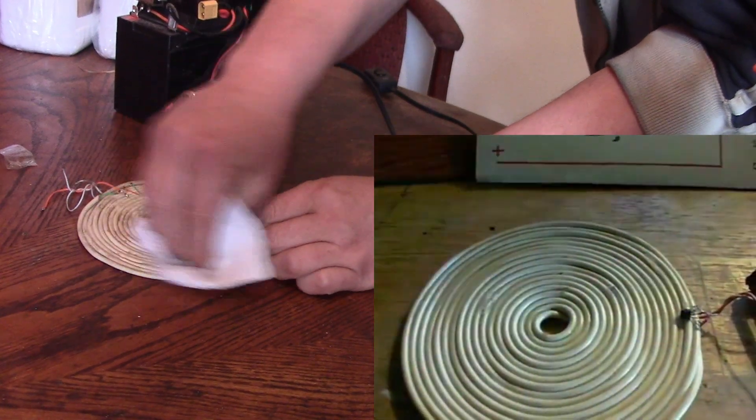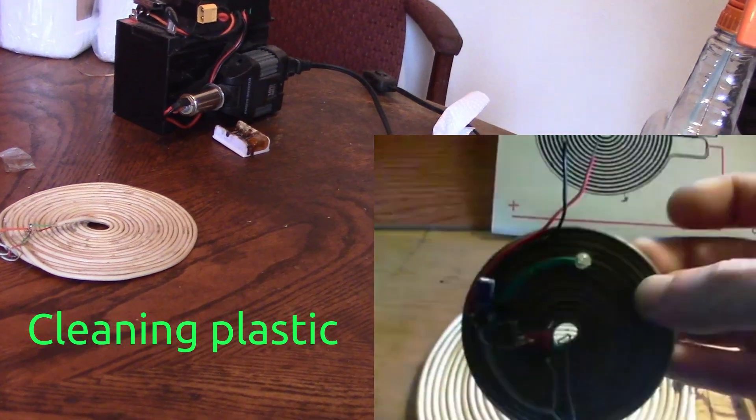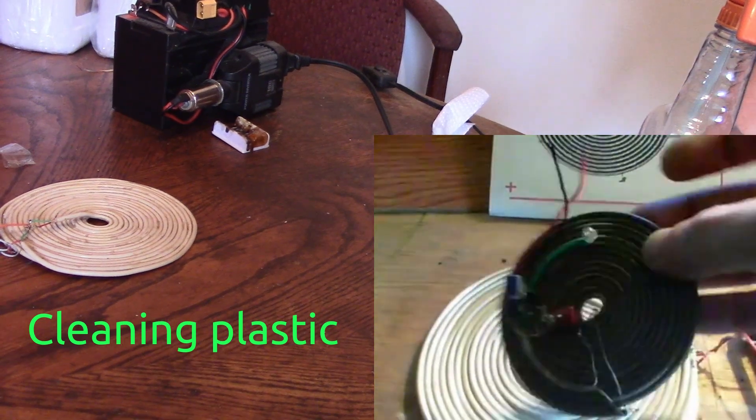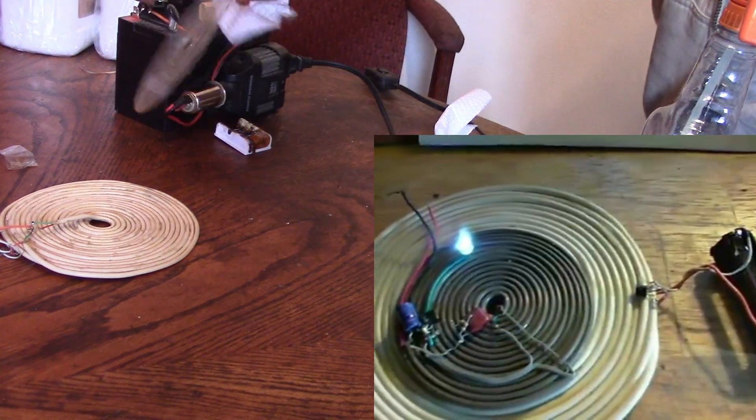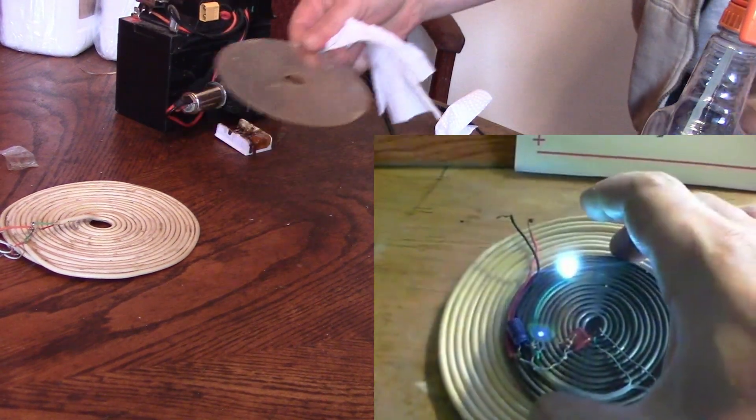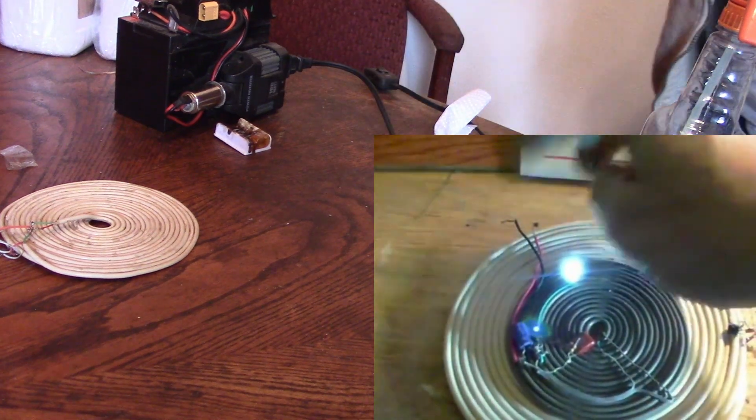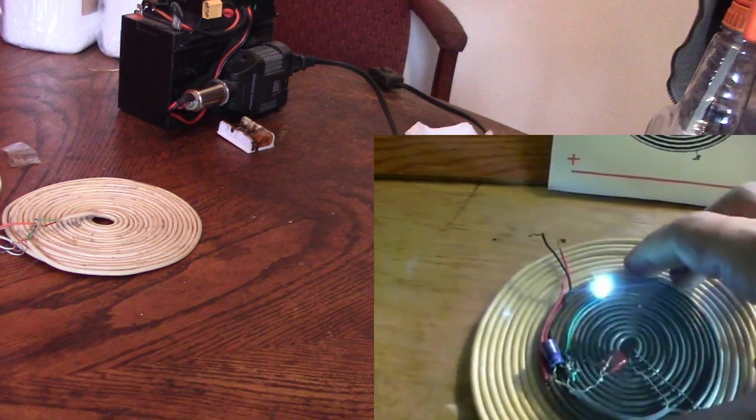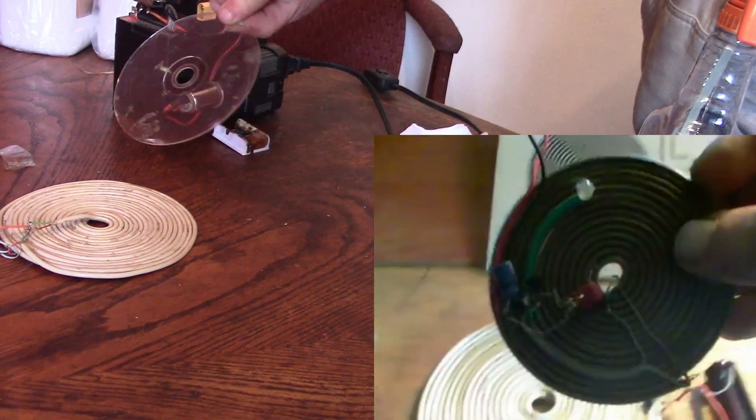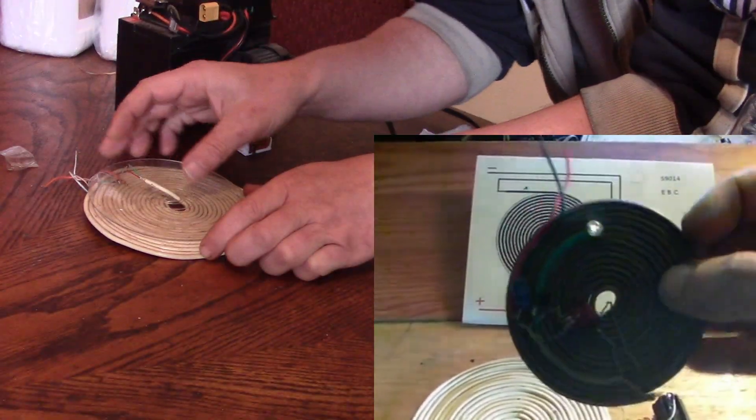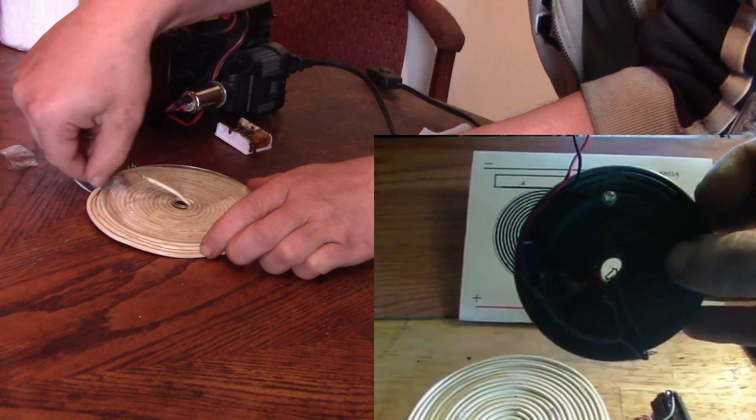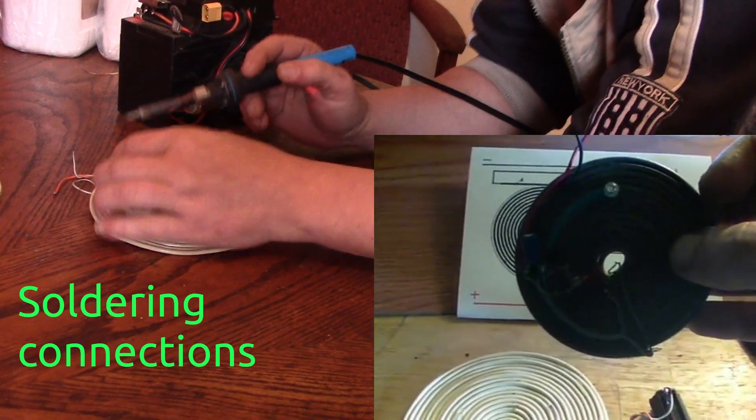But also, this can power loads as well. Here we have a blocking oscillator and a pancake coil. You can see that the light comes on quite nicely. There's the normal input wires for the battery to go on. If I remove it, the blocking oscillator starts up.